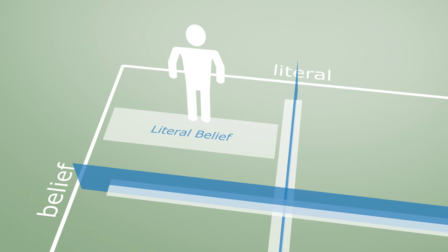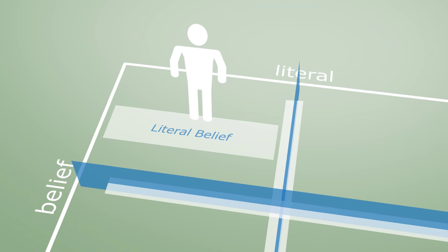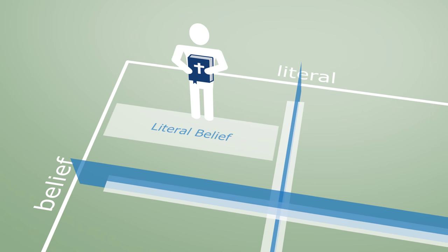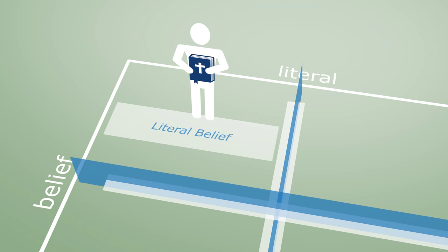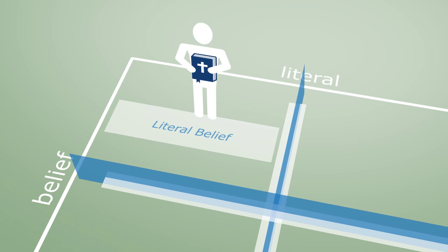The first belief style, literal belief. Literal belief assumes an immediate access to God. Biblical texts are usually read and accepted literally. What is written is the way it really is. There can only be one truth. Literal belief: a literal affirmation of contents of belief.